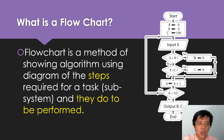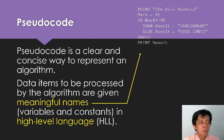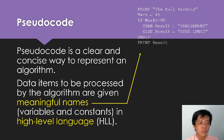I will be explaining to you how to create a flowchart later on. You need to know whether you put the arrow yes or no. A pseudocode is a clear and concise way to represent an algorithm. Data items to be processed by the algorithm are given meaningful names - variables and constants in high level language.